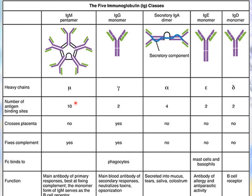The valency differs among antibody classes. IgM has 10 antigen-binding sites. Monomeric antibodies — IgG, IgE, and IgD — each have two antigen-binding sites. IgA, being a dimer, has four antigen-binding sites. Of these five classes, only IgG is able to cross the placenta and provide protection to the fetus. IgM and IgG both have the ability to participate in complement fixation. IgG can also bind to phagocytes via its Fc region, and IgE is bound to mast cells and basophils by means of its Fc region.